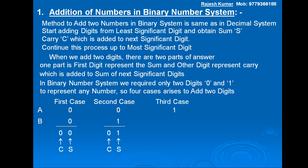Third case — when A is 1, B is 0, their sum is 01. Fourth case — when A is 1, B is also 1, their sum becomes 10, meaning sum S is 0 and carry C is 1, which is added to the next significant digit. These are the four cases to find sum S and carry C.